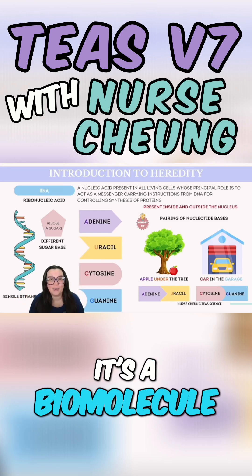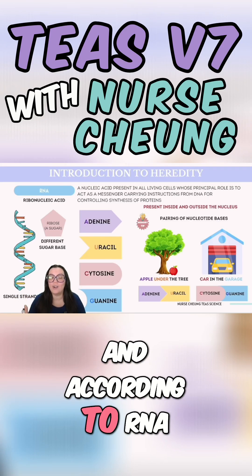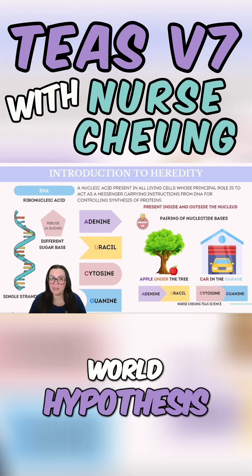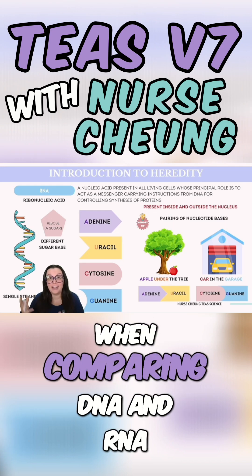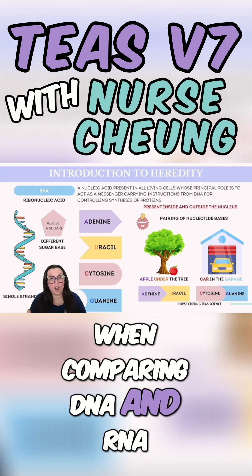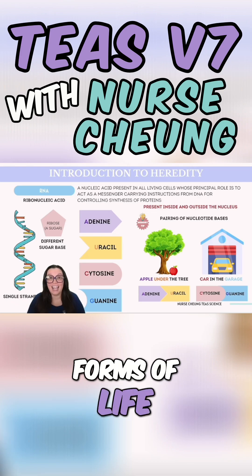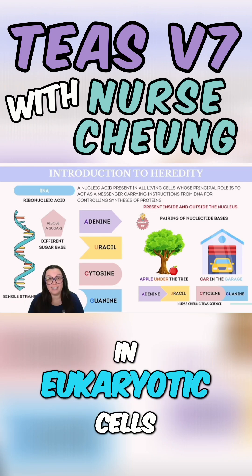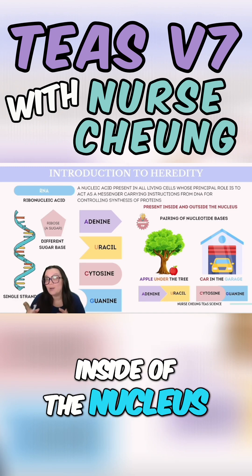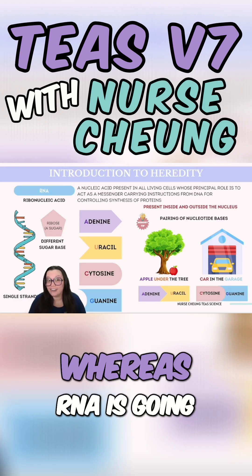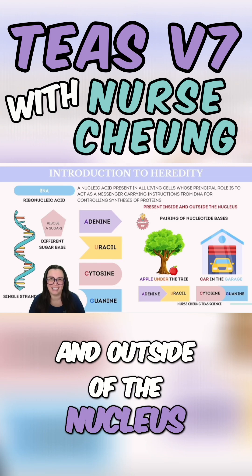Ultimately, it's a biomolecule just as pivotal as DNA, and according to the RNA World Hypothesis, RNA might have even predated DNA. When comparing DNA and RNA, it's notable that both are found across all forms of life. In eukaryotic cells, DNA is typically located inside the nucleus, whereas RNA is going to be present both inside and outside of the nucleus.